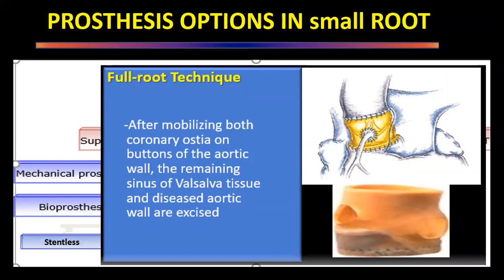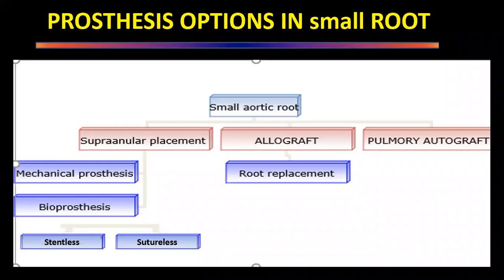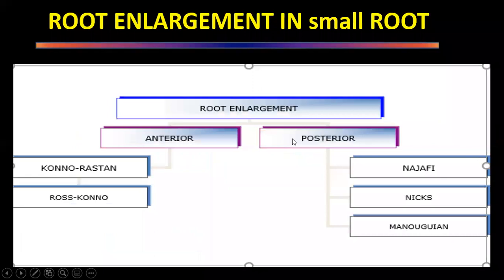Similarly, the pulmonary autograft can be implanted into the aortic root using all three techniques. The Ross procedure is a separate topic and has not been included in this talk.